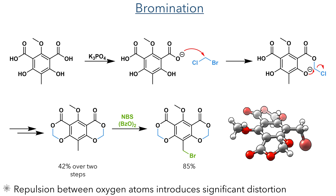This was then brominated using NBS and benzoyl peroxide. This product could be crystallised, and the structure showed significant distortion. This is due to electrostatic repulsion between the lone pairs on the oxygen atoms that are held in close proximity due to the rigidity of the polycyclic structure. It is this highly strained structure that likely accounts for the low yield of the dioxinone formation.